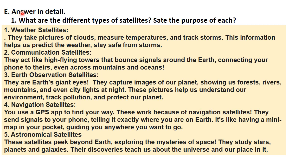The first long question: what are the different types of satellites and the purpose of each? First, weather satellites — they take pictures of clouds, measure temperature, and track storms. This information helps us predict the weather and stay safe from storms. Communication satellites act like high-flying towers that bounce signals around the earth, connecting phones even across mountains and oceans.